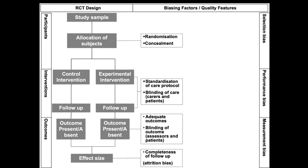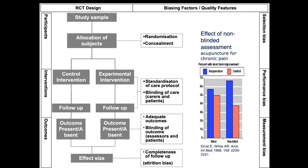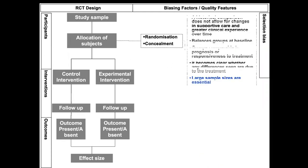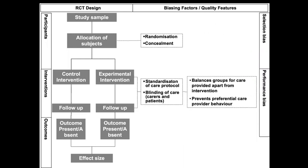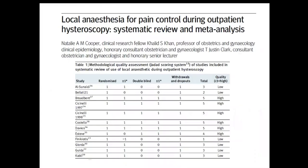Finally, there is attrition bias, which refers to losses to follow-up affecting the estimation of effect size. If studies are not blinded, they tend to produce an effect size larger than in studies that are blinded, meaning we get an impression that the intervention is more effective when there is a lack of blinding. Here are the things we look for in a detailed quality assessment at various steps of data extraction with respect to internal validity assessment of the selected studies.